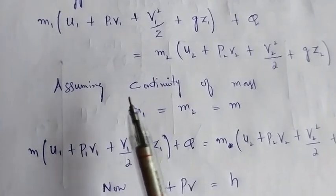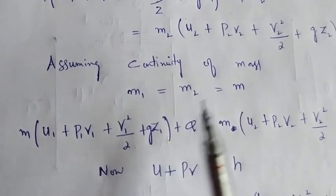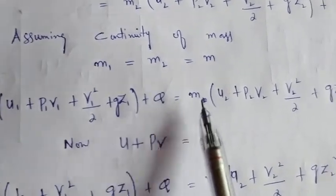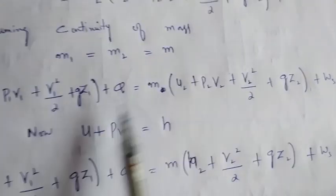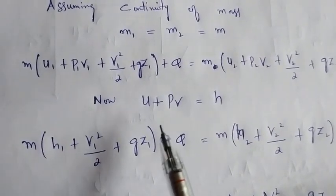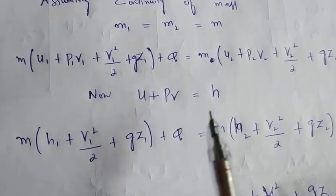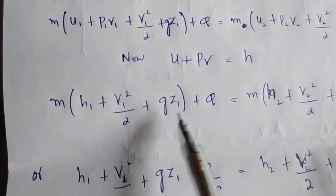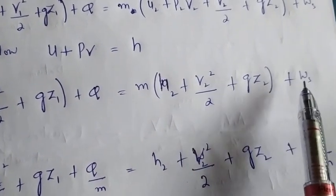Since the continuity equation gives us M1 = M2 = M, we rewrite the equation as: M·(U1 + P1·V1 + V1²/2 + g·Z1) + Q = M·(U2 + P2·V2 + V2²/2 + g·Z2) + WS. We already know that U + PV = H, where H is called the enthalpy of the system. Substituting, we get: M·(H1 + V1²/2 + g·Z1) + Q = M·(H2 + V2²/2 + g·Z2) + WS.